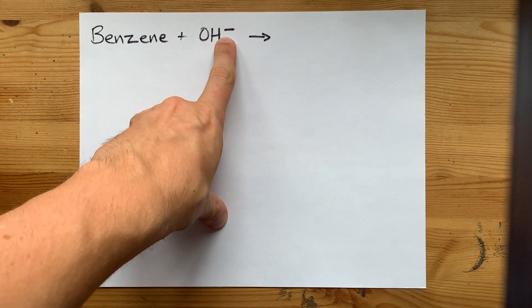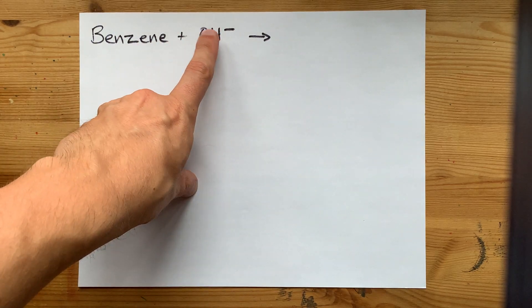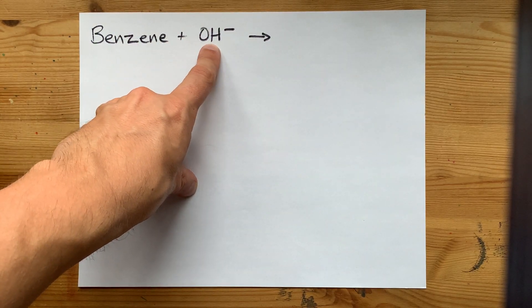This OH-, if it was going to do anything, would be ripping an H away from benzene. After all, it is the definition of a strong base.